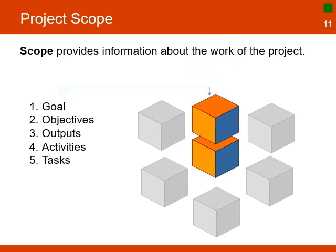The next module is scope. It provides information about the work breakdown structure in the project, including project goals, objectives, outputs, activities, and tasks required to deliver the expected benefits. The module will include detailed information on each activity, including instructions and quality standards that the project has to follow.